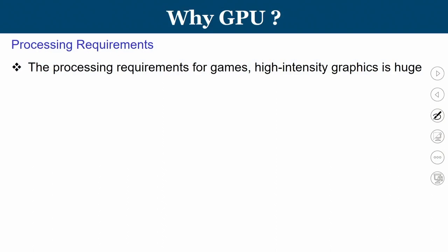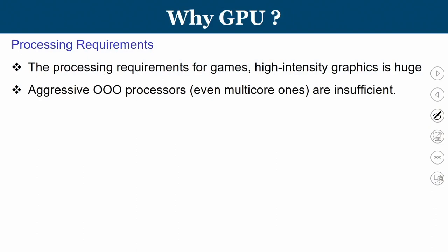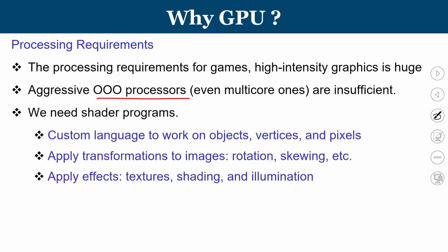What are the processing requirements? Processing requirements for high-intensity graphics are very huge — even aggressive out-of-order processors are insufficient. Here we use a special category of programs known as shader programs. In shader programs, we have a specific custom language to work on objects, vertices, and pixels that define an image. We then use transformations on these images — something like rotating or skewing the image — and can apply effects on textures, shading, and illumination.